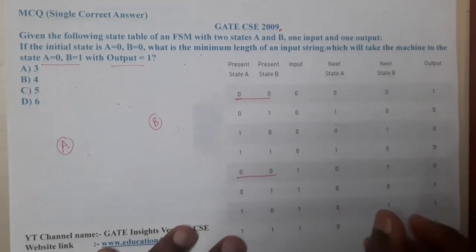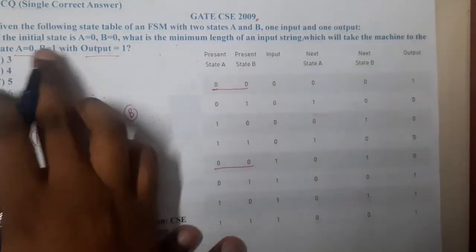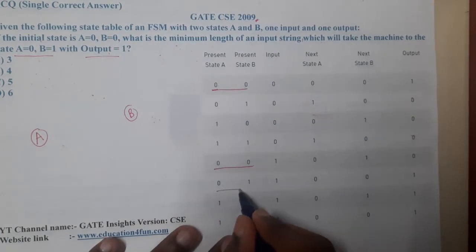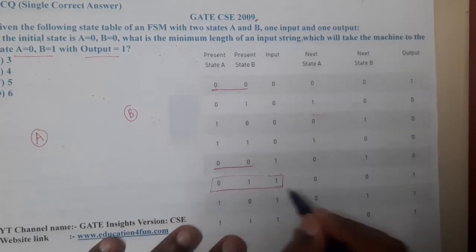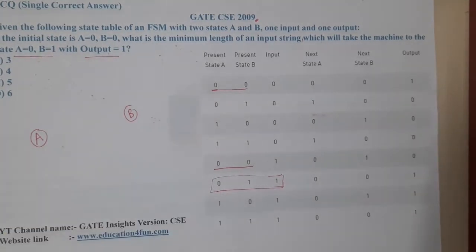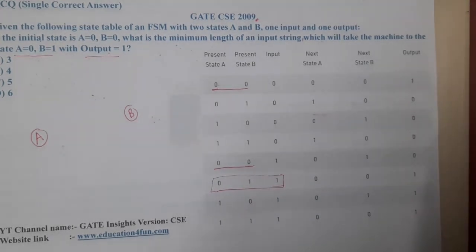The best case to end is at (0,1) with output 1. Let's check if (0,1,1) appears anywhere else in the table — it does not. So we need to end up with this. The best way is to use trial and error. For easy understanding, let us proceed directly.